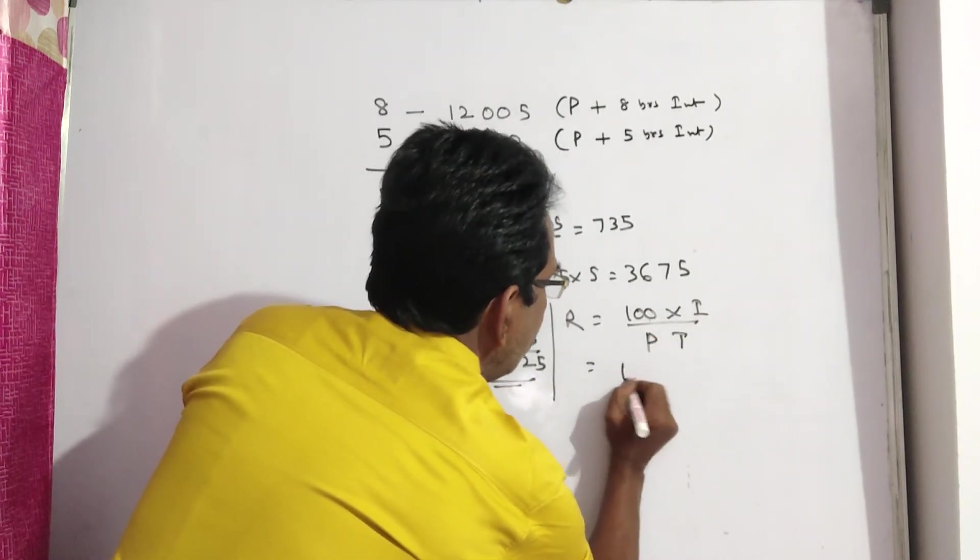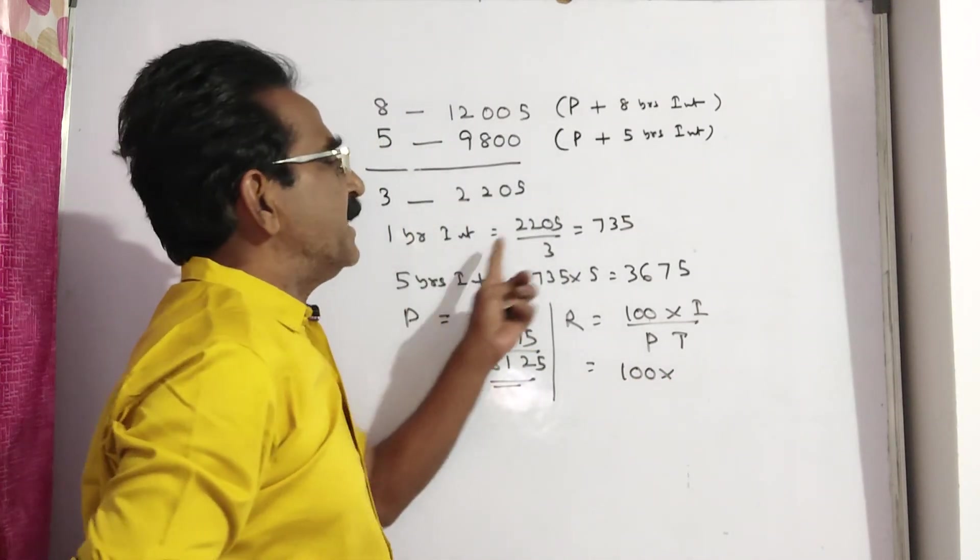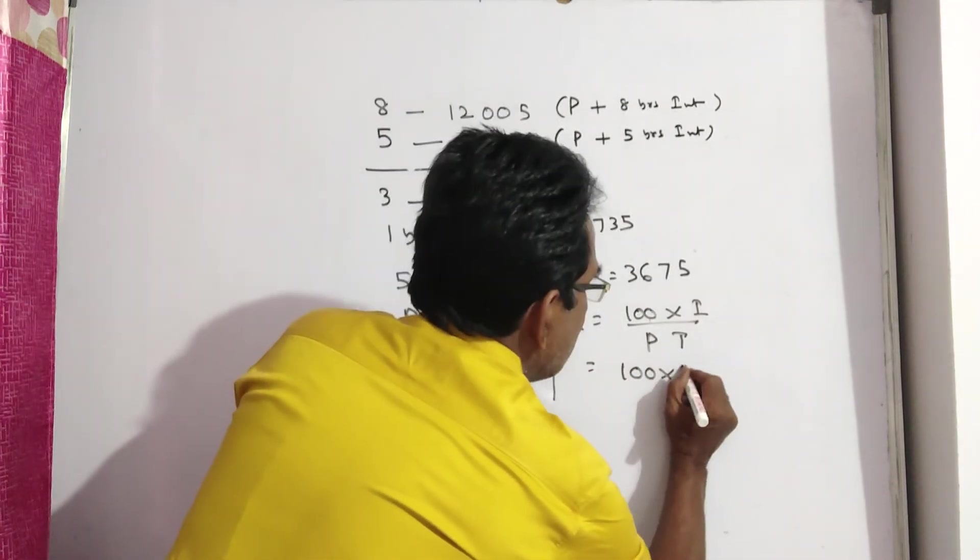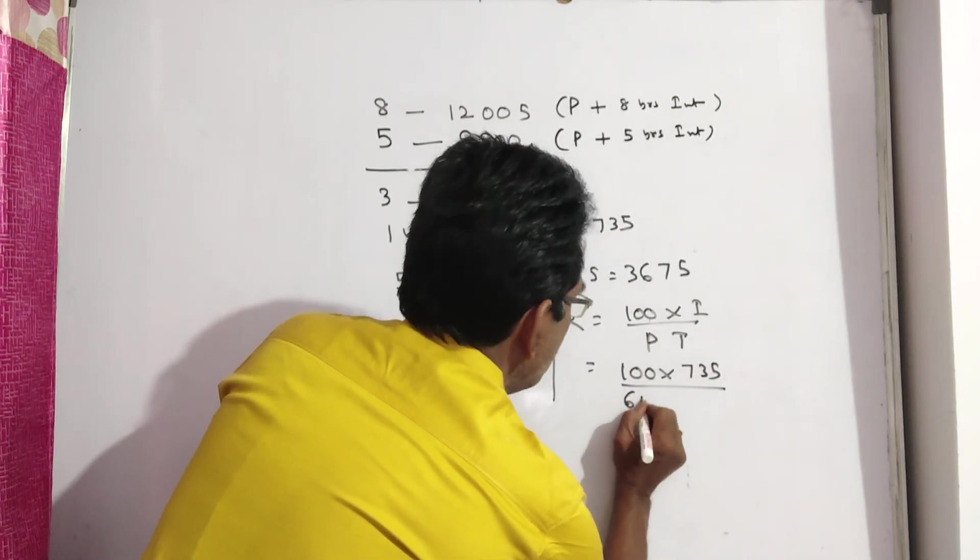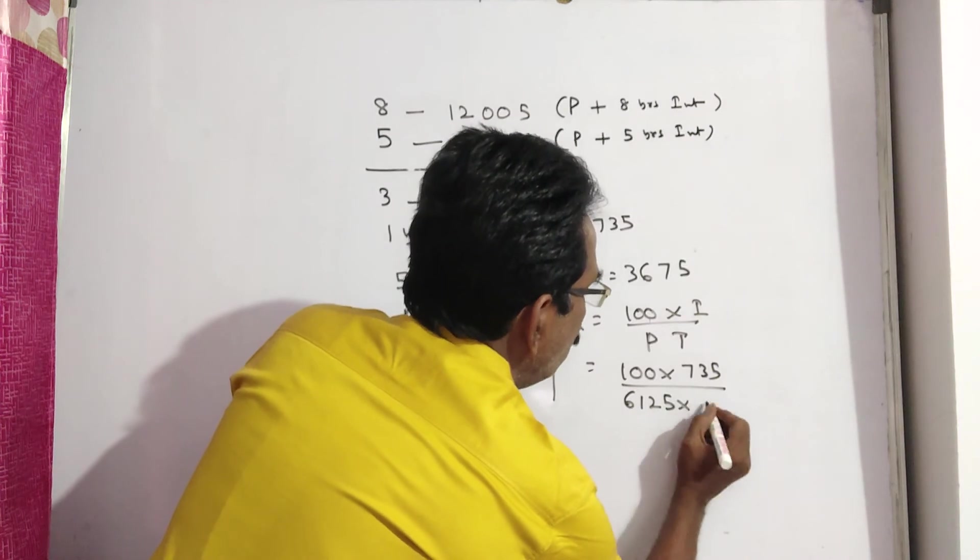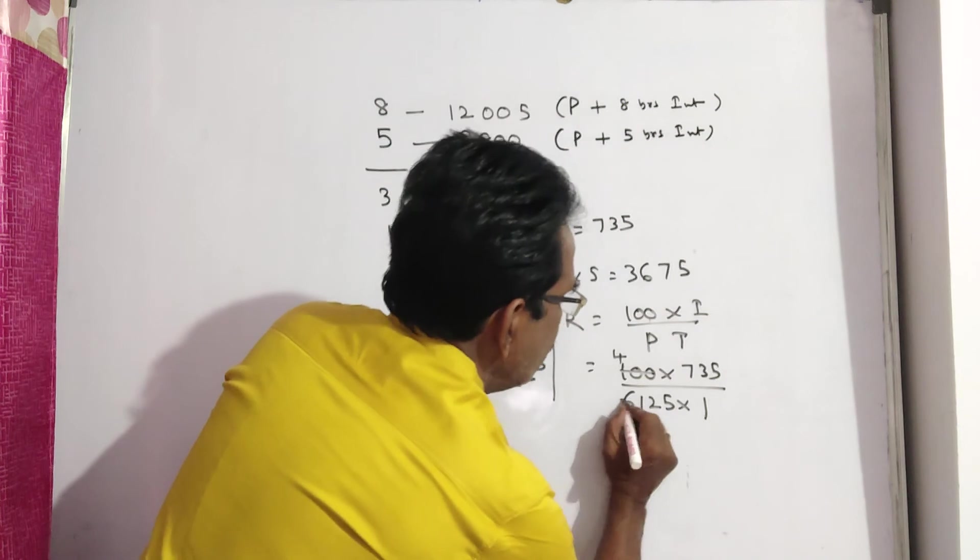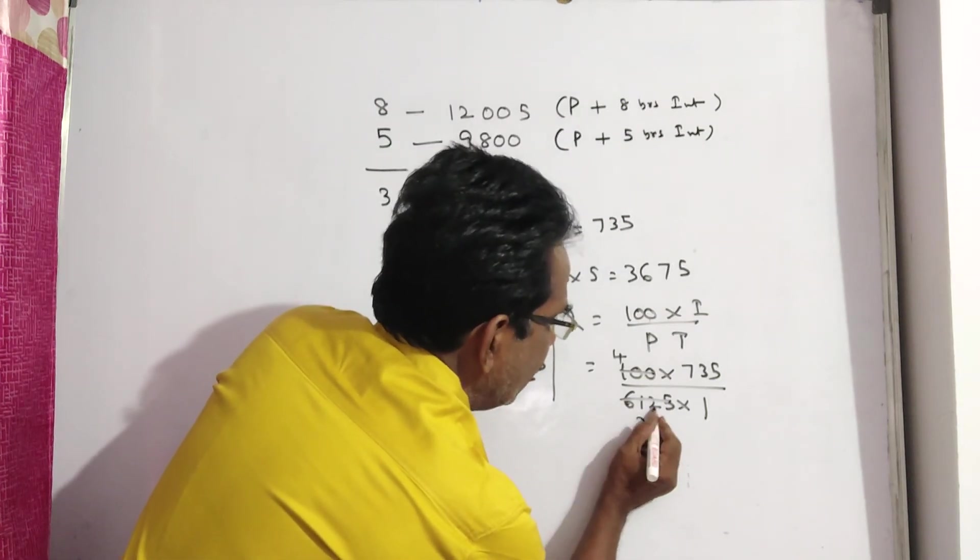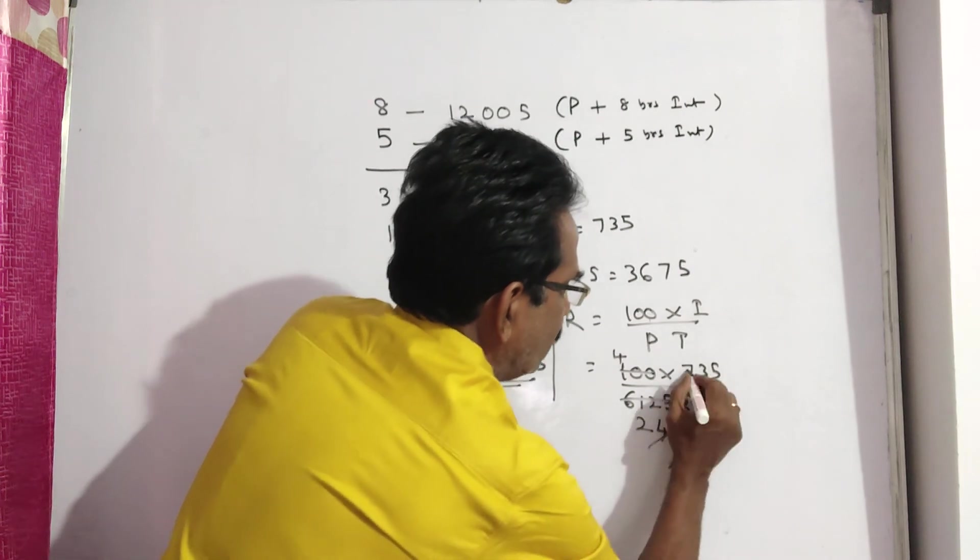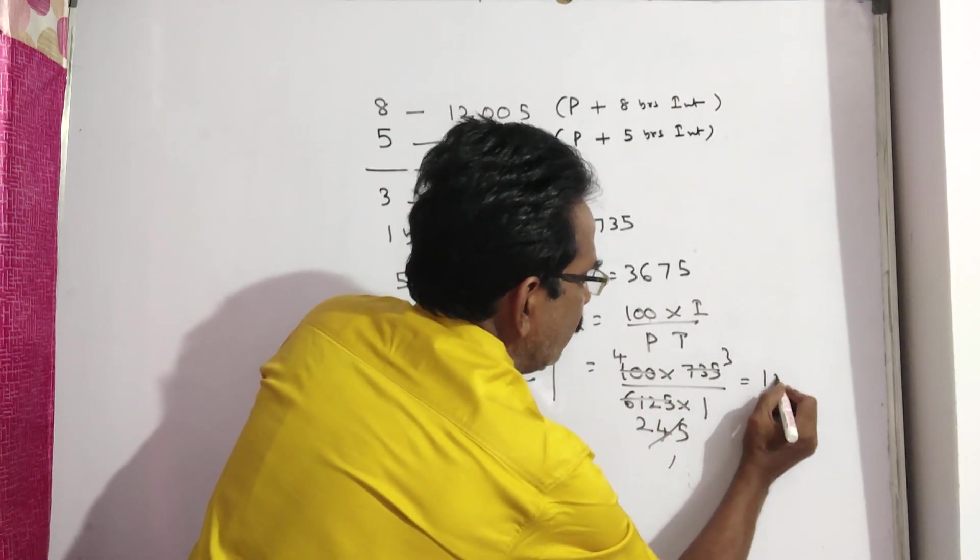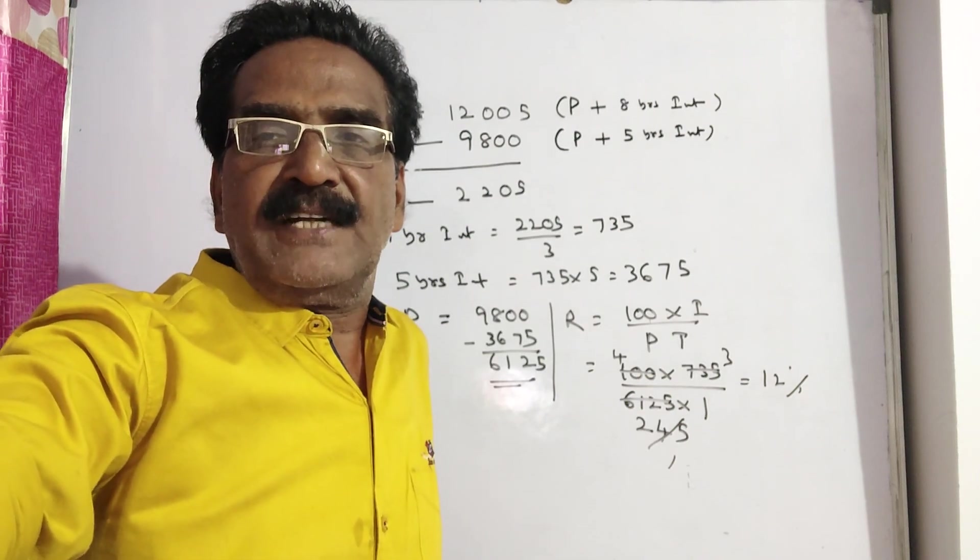This we know. 100 into, you can take this one, 1 year interest is 735. 735 I by P 6125 into T 1 year. 25 4's, 25 2's 50, 1 12, 4's, 5's, 2 45 3's, 4 3's, 12% is the rate of interest. Ok friends, thank you.